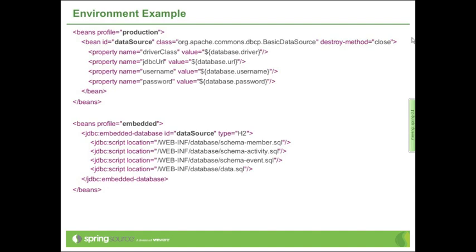As an example, the data source definition is different between the production and the embedded environment. The profile names are completely arbitrary — it's important that you use profile names that match what your application is doing and match the terminology that your team is using. The embedded data source is a locally bootstrapped instance, but it's exposed as a bean with the name 'dataSource', only if the profile 'embedded' is active.